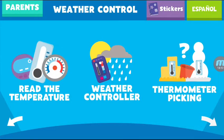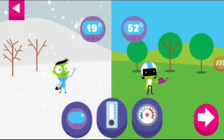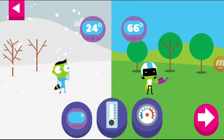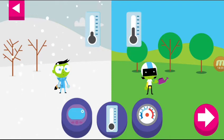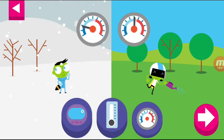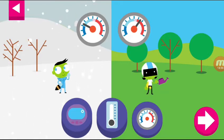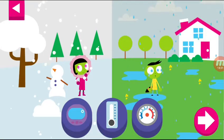Let's play read the temperature. Tap on a thermometer to see what it reads. The higher the number on the digital thermometer, the hotter the temperature. The liquid in the thermometer rises when the temperature increases. Look where the needle stops on a dial thermometer.